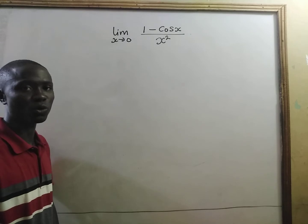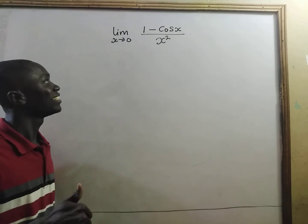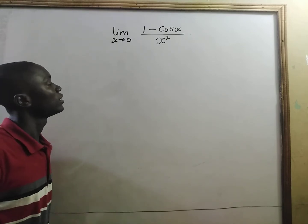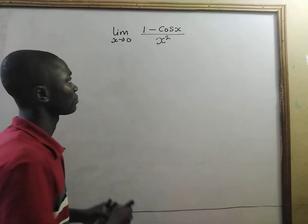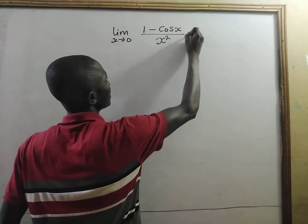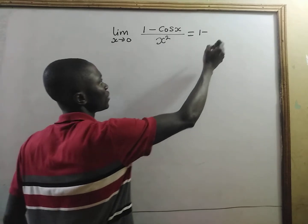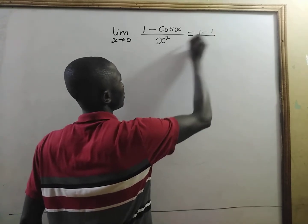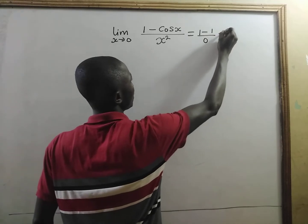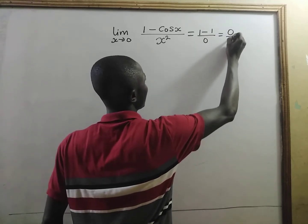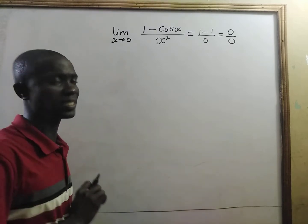And this is the simple question that we have on the board. Very, very simple. Now, let's put in zero and see what we get. We are going to get 1 minus cosine of zero, which is 1, divided by zero squared — zero. So, we get zero divided by zero, which is indeterminate.